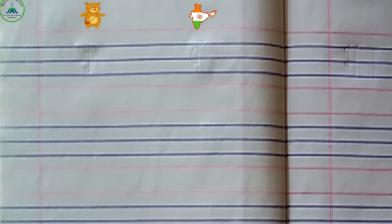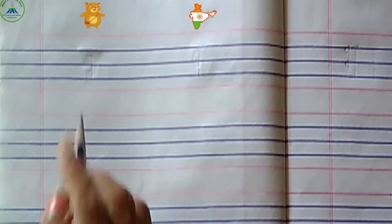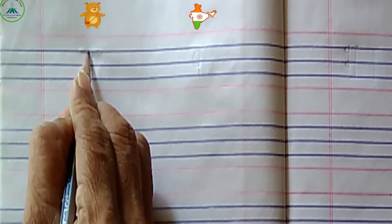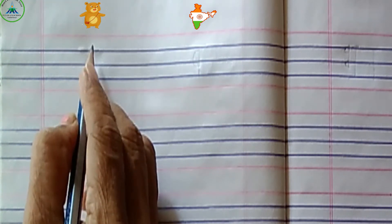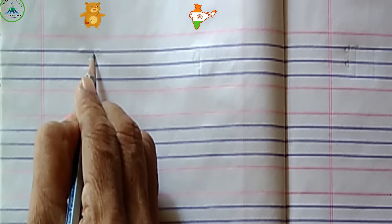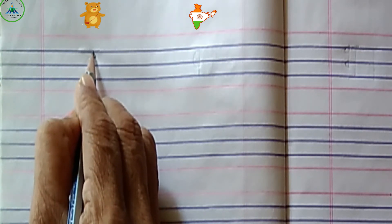व्यंजन भह लिखने के लिए हमें क्या करना हैं? The first line is a circle. How do you create a circle?